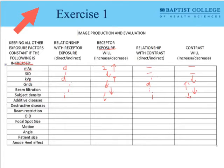Additive diseases are going to have an indirect relationship with receptor exposure — as additive pathology increases, we would see a decrease in receptor exposure. As it relates to contrast, though, if we had an increase of fluid in the lung for example, we would see a direct relationship with contrast. So there's a direct relationship between additive pathology and an increase in contrast.